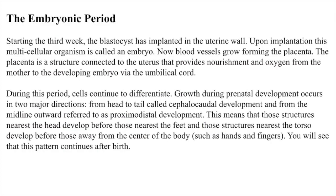The Embryonic Period. Starting the third week, the blastocyst has implanted in the uterine wall. Upon implantation, this multicellular organism is called an embryo. Now, blood vessels grow, forming the placenta. The placenta is a structure connected to the uterus that provides nourishment and oxygen from the mother to the developing embryo via the umbilical cord. During this period, cells continue to differentiate. Growth during prenatal development occurs in two major directions: from head to tail, called cephalocaudal development, and from the midline outward, referred to as proximodistal development. This means those structures nearest the head develop before those nearest the feet, and those structures nearest the torso develop before those away from the center of the body, such as hands and fingers.